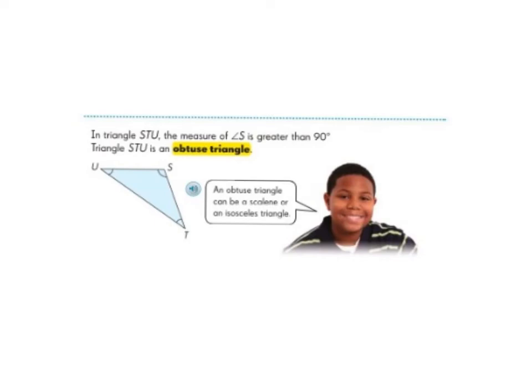The next kind of triangle we're going to talk about when classifying a triangle by its angles is an obtuse triangle. And in an obtuse triangle, one of the angles is going to be greater than 90 degrees. So in triangle STU, the measure of angle S is greater than 90 degrees, which makes triangle STU an obtuse triangle.